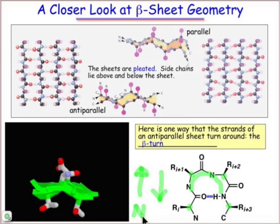So we're gonna have an N-direction, we'll have a C-direction, and by making this turn, we're going to be able to get adjacent strands to run anti-parallel to one another. That's known as the β-turn.